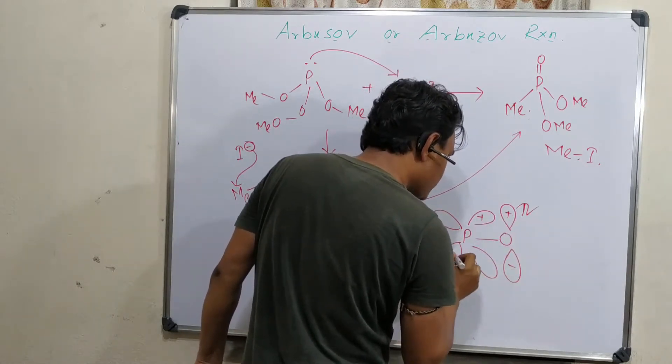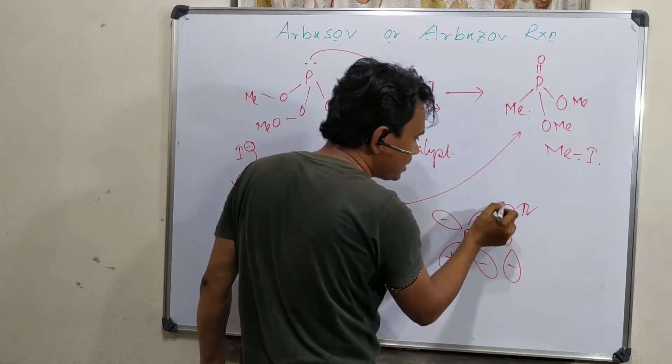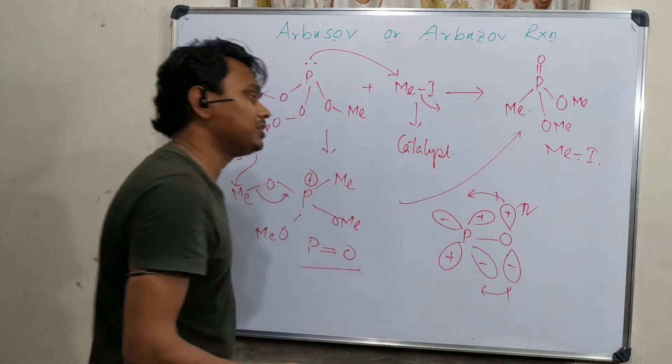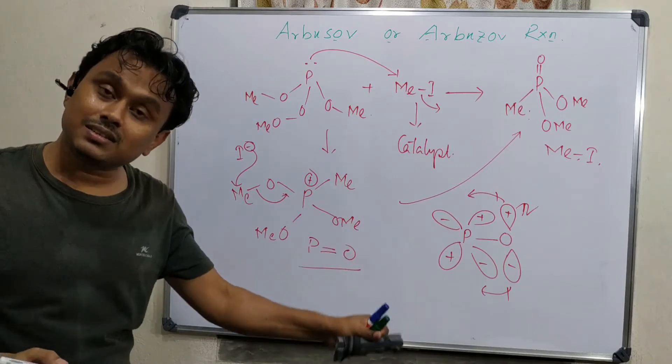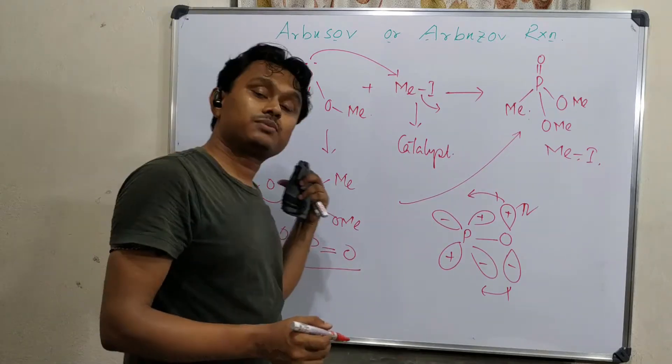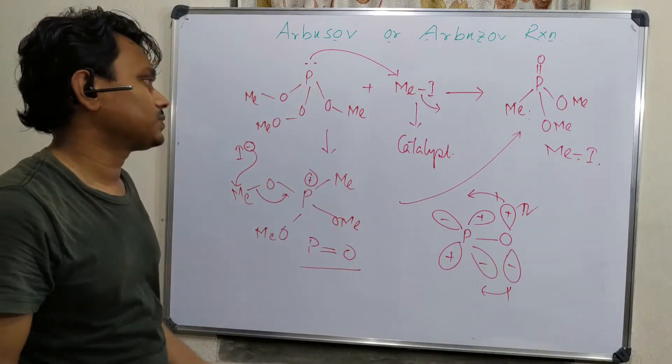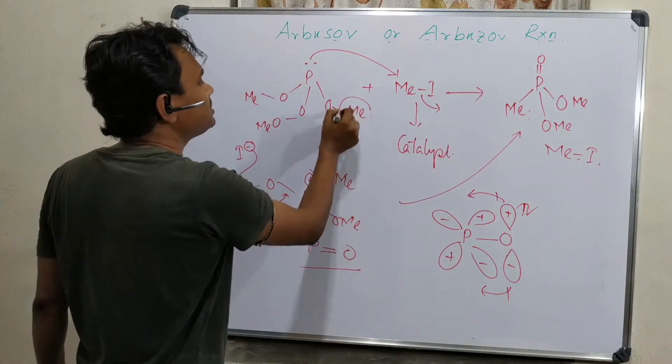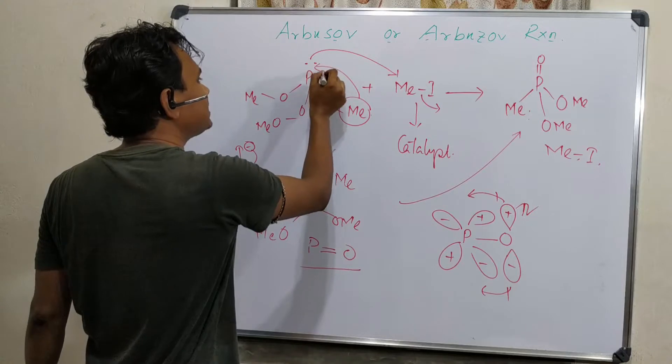So in this way, this rearrangement happens which gives this bond multiple bond character. This is the reason: stabilization and higher strength of phosphorus-oxygen bonds. So ultimately what is happening? Actually, this methyl group is shifted here.